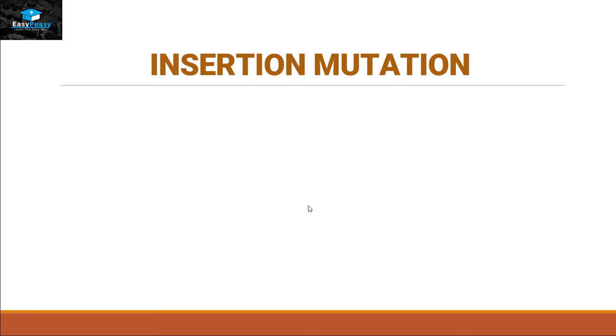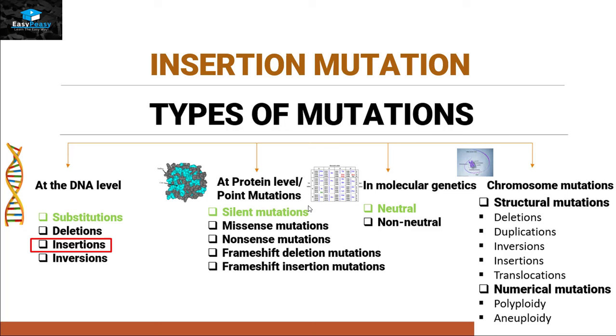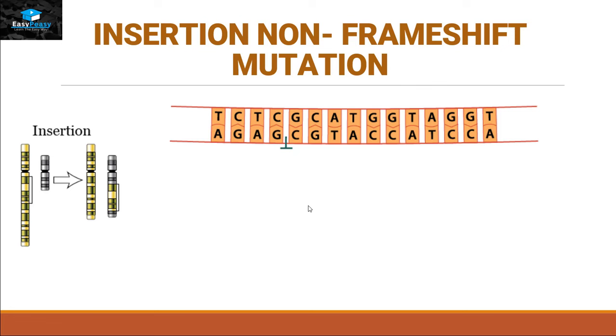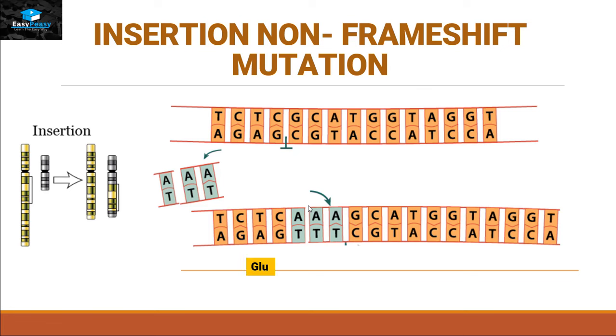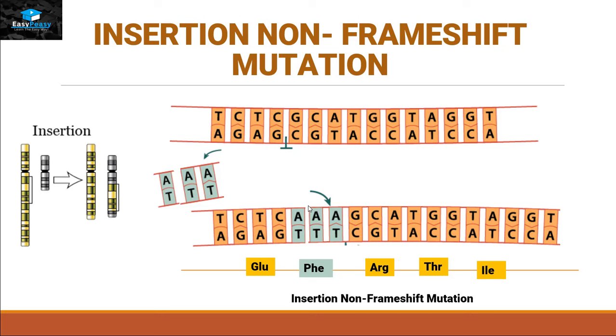Insertion mutation under the types of mutation is present at the DNA level as insertions, at the protein level as frameshift insertion mutation, in molecular genetics as non-neutral mutation, and in chromosome mutation as structural mutation. Insertion mutations can be of two different types: insertion non-frameshift mutation and insertion frameshift mutation. For insertion non-frameshift mutation, if we add three nucleotides at a point in the DNA double strand, these three nucleotides code for a new amino acid. In the polypeptide chain, a phenylalanine appears that should not be there, but due to the insertion mutation it comes into the chain. With the addition of this phenylalanine, the properties of the protein can get changed — this is insertion non-frameshift mutation.